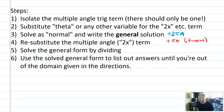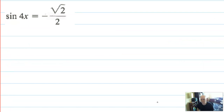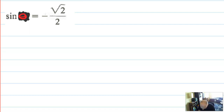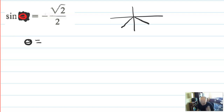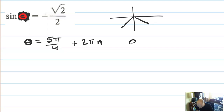Let's do another example — that last problem took 17 minutes; I promise we'll go faster. I'm trying to solve sine of 4x equals negative root 2 over 2. The first thing I'll do is pretend it's the easier problem: sine of theta equals negative root 2 over 2. That matches with the π over 4s but sine is negative, so theta equals 5π over 4 plus 2πn, and theta equals 7π over 4 plus 2πn.